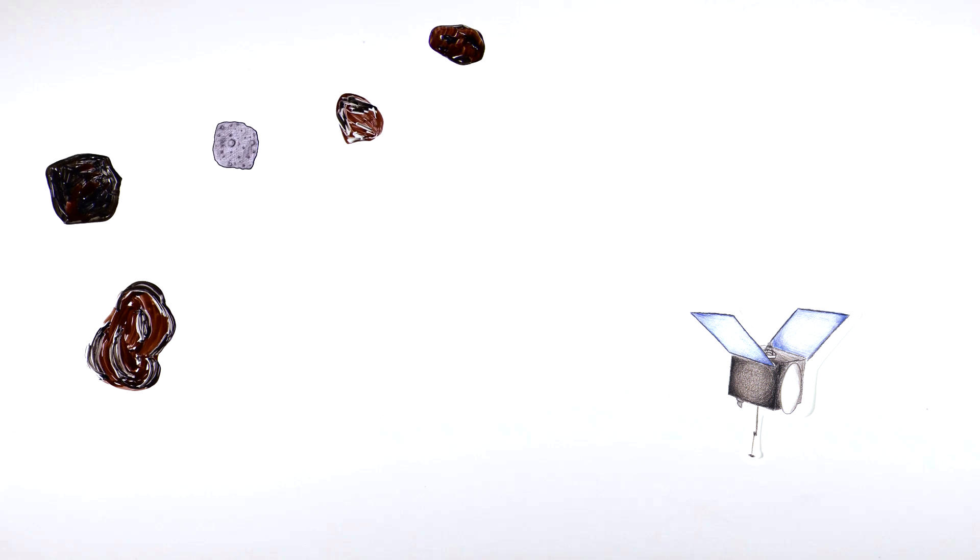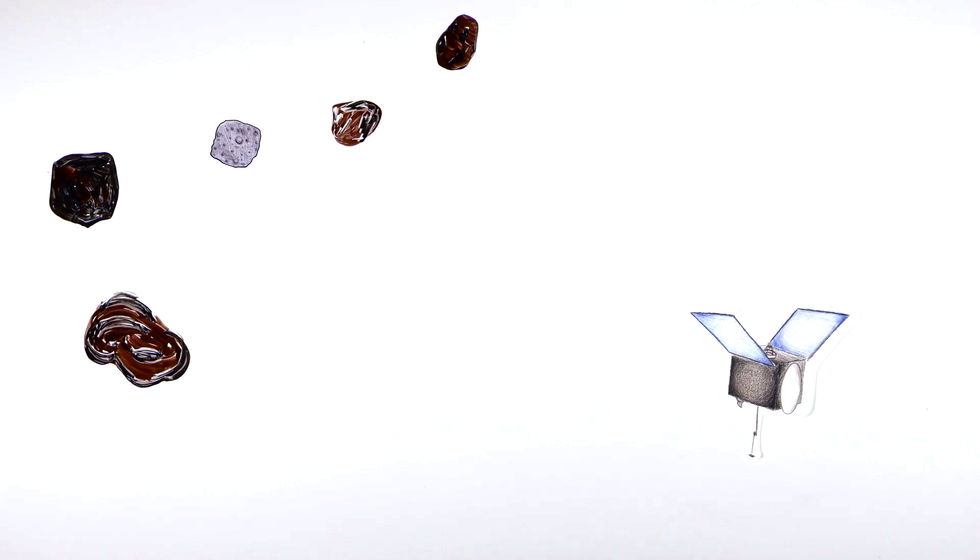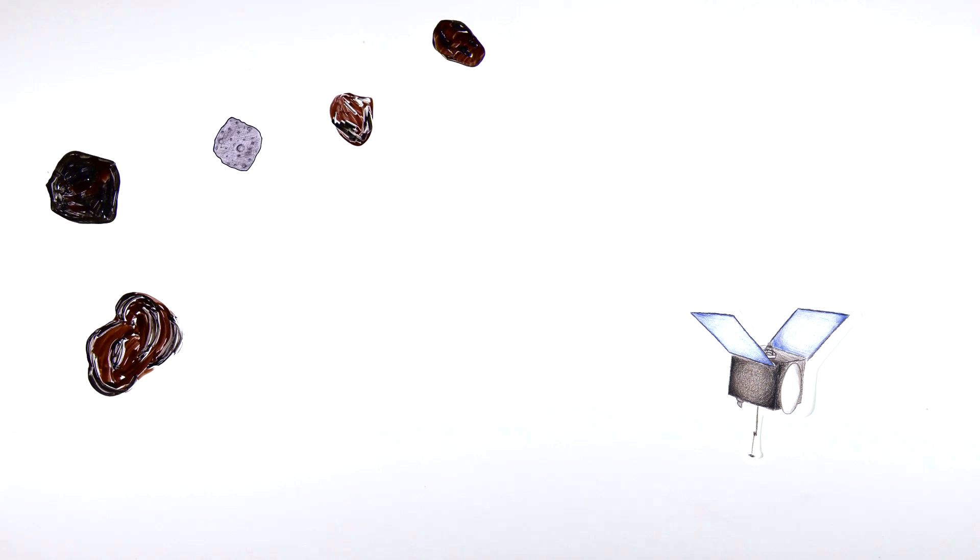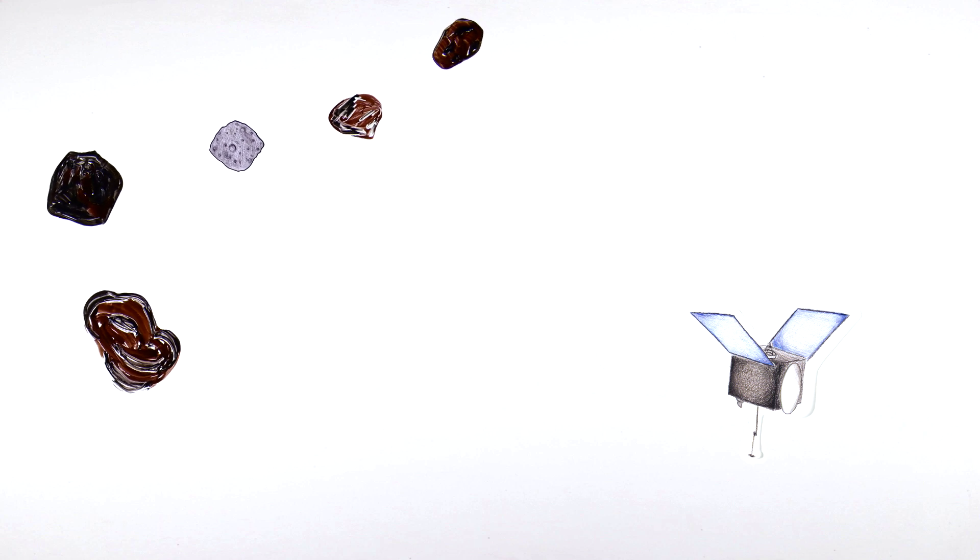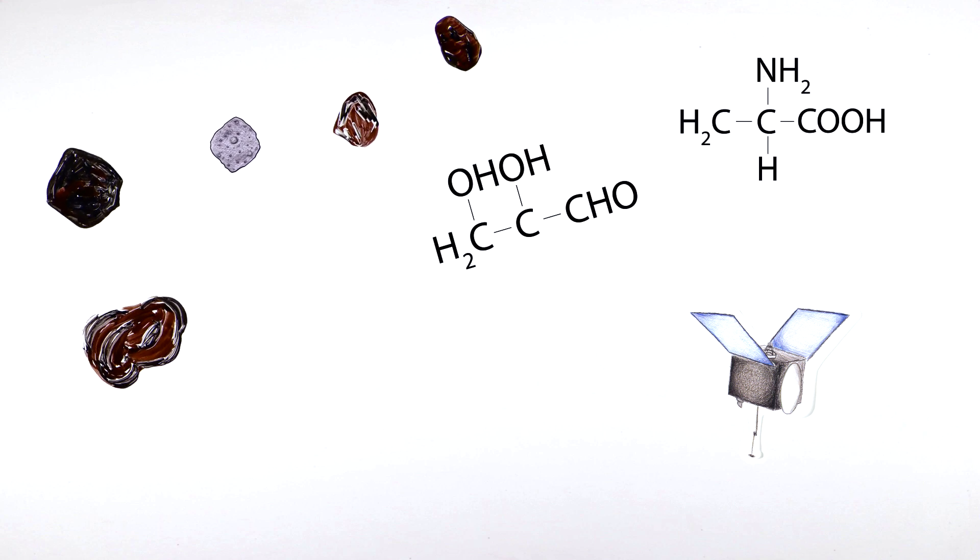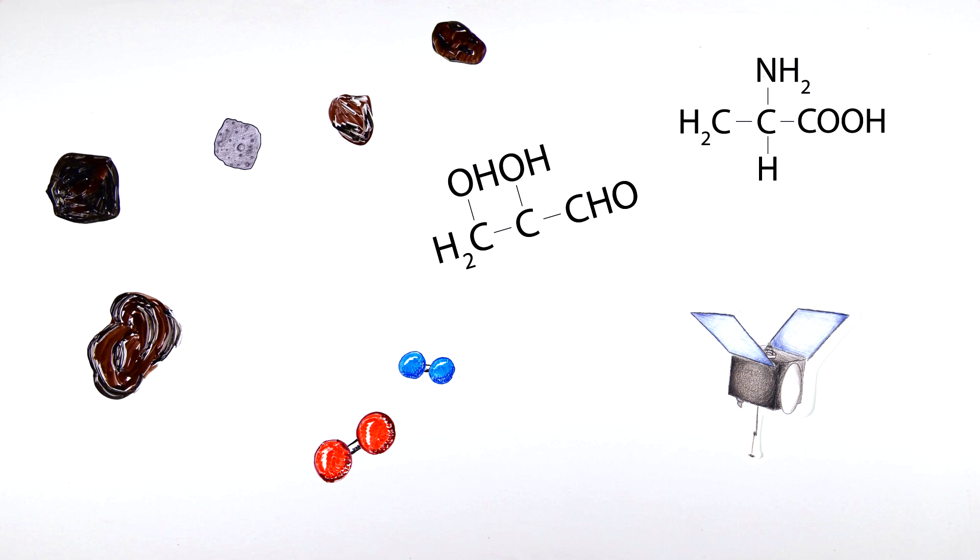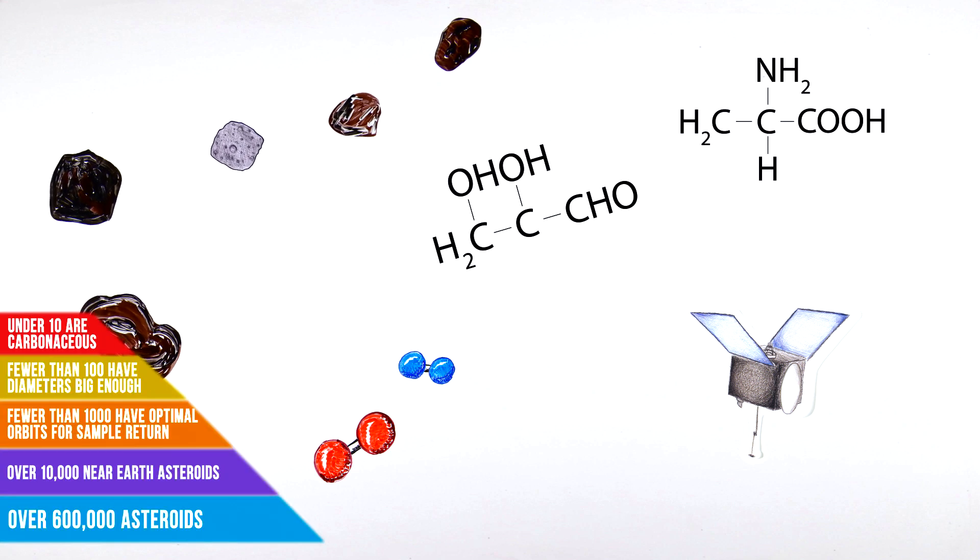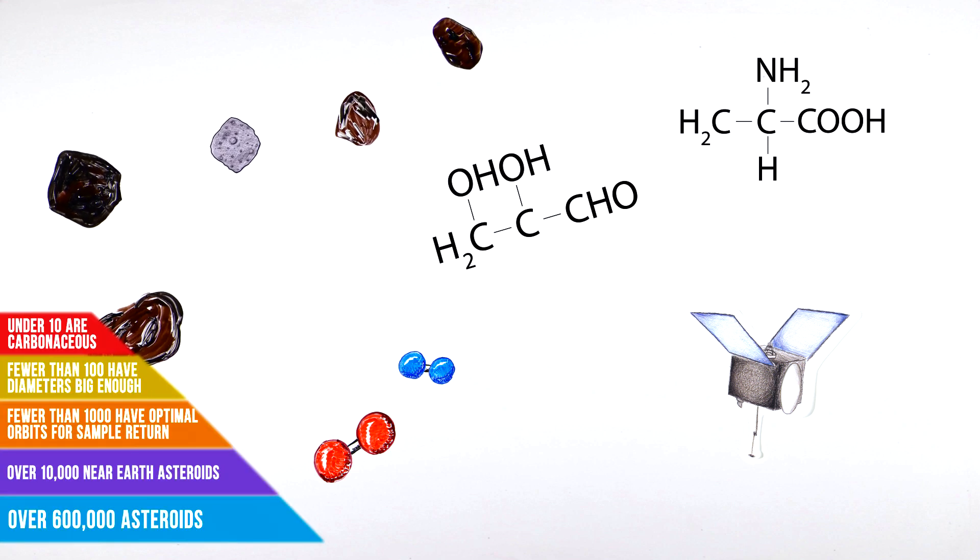OSIRIS-REx scientists want a sample from the earliest time in the solar system to learn about the origin of life. They want an asteroid that is organic-rich and has volatiles like oxygen and hydrogen. Under 10 of the remaining asteroids are carbonaceous.